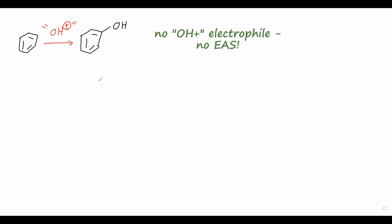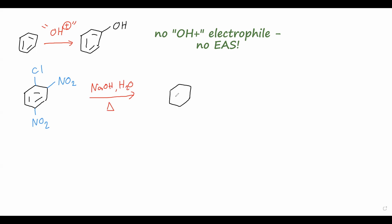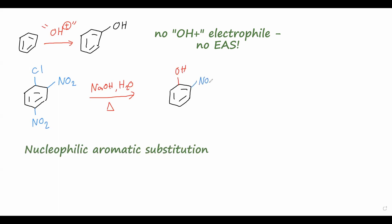Let's consider this slightly more complicated substituted benzene ring. We're going to have a chlorine on one carbon, and then two nitro groups arranged ortho and para to that chlorine. If we treat this compound with aqueous sodium hydroxide and heat it up, we can produce the product where we've replaced the chlorine with a hydroxyl group, while still retaining the two nitro groups on the ring. This is our introduction to nucleophilic aromatic substitution, where OH− is acting as a nucleophile to substitute the chlorine, which is our leaving group on the aromatic ring.